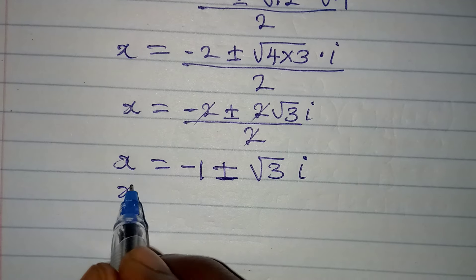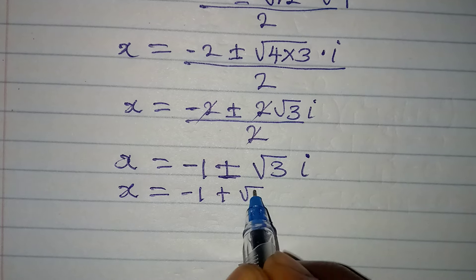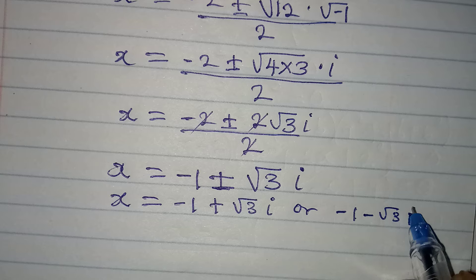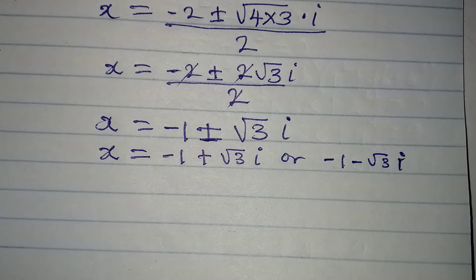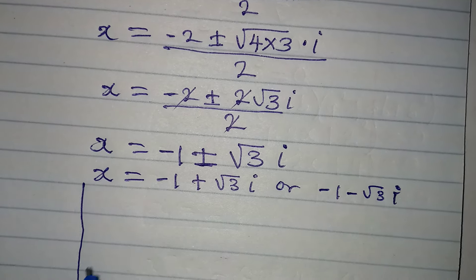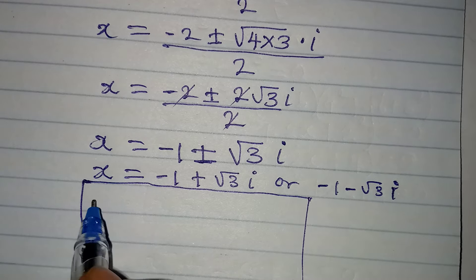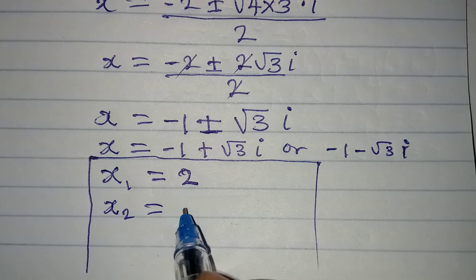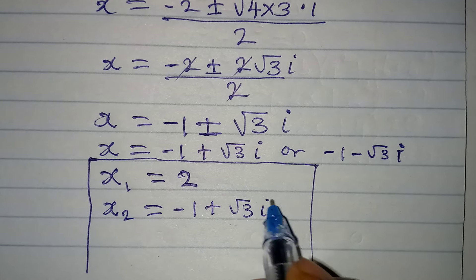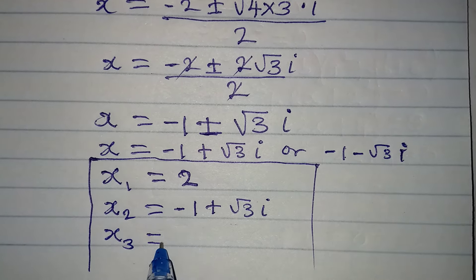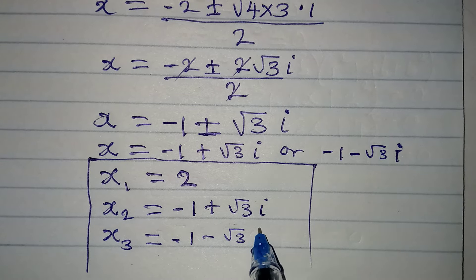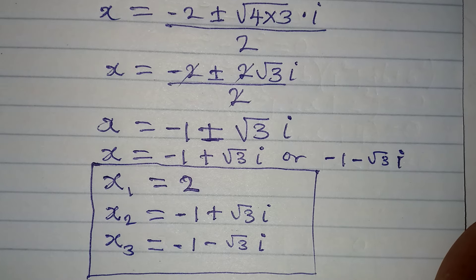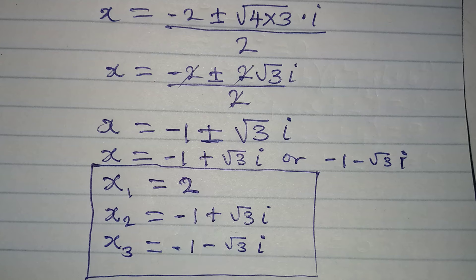This is a 2-in-1 solution: x equals minus 1 plus square root of 3 times i, or minus 1 minus square root of 3 times i. Now let's bring the three solutions together. x₁ equals 2, x₂ equals minus 1 plus √3·i, and x₃ equals minus 1 minus √3·i. Remember, it is only x₁ which equals 2 that is the real solution; the other two are complex.